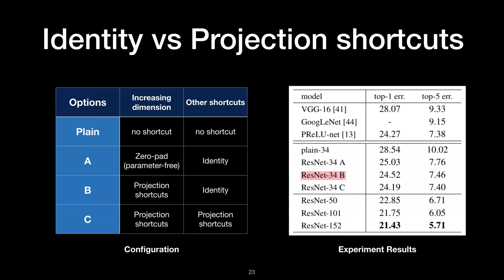As you can see the results on the right side, the plain network has the highest error rate, while zero padding and using the identity has a much lower error rate. Using projection shortcuts on increasing dimensions only has an even lower rate. And lastly, using projections for all of the shortcuts is marginally better.